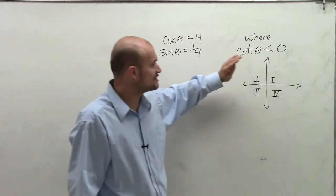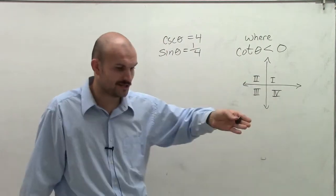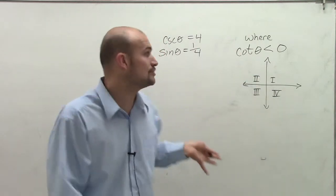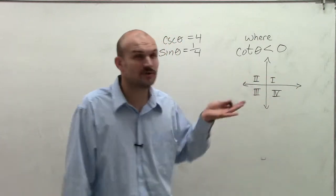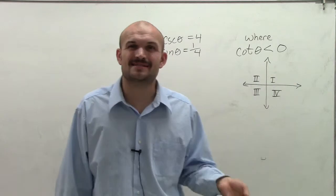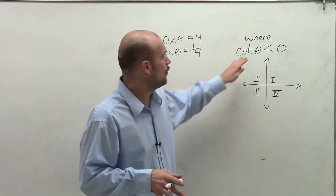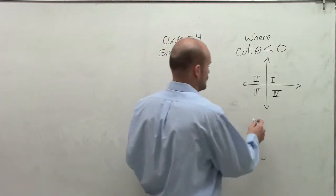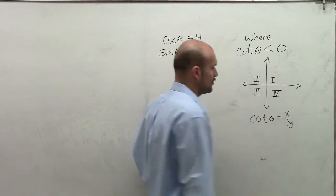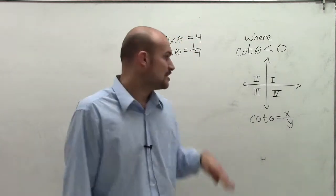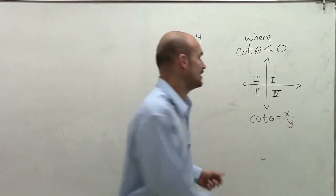Now, this triangle needs to satisfy the constraint where cotangent of theta is less than 0. Rather than using a quadrant directly, let's look at what cotangent represents in terms of coordinate points. Cotangent of theta represents the ratio of x over y. So let's look at what the x and y coordinates look like in each quadrant.